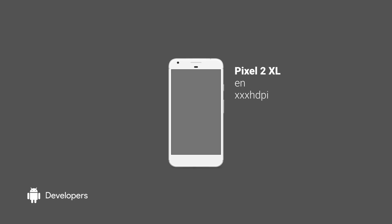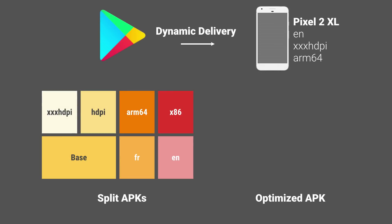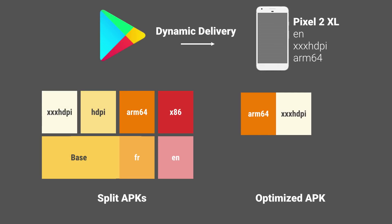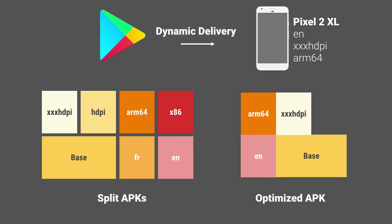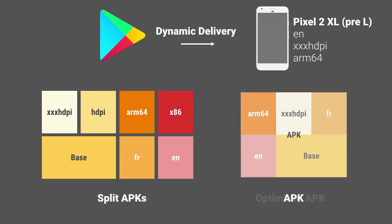For example, as an English-speaking user on a Pixel 2 XL with 560 DPI resolution running on an ARM64 processor, if I install your app, Dynamic Delivery will find just the split APKs that I specifically need. These split APKs will be delivered to compatible devices and behave like a single, customized APK optimized for my device. For earlier devices, Dynamic Delivery will send down a multi-APK with resource-appropriate ABI and density resources.